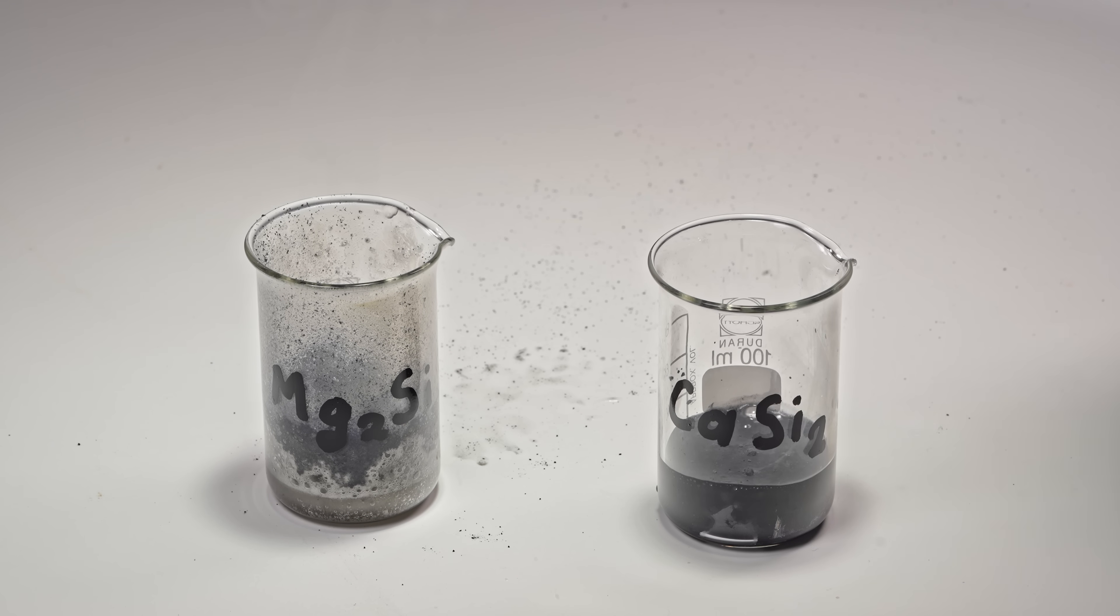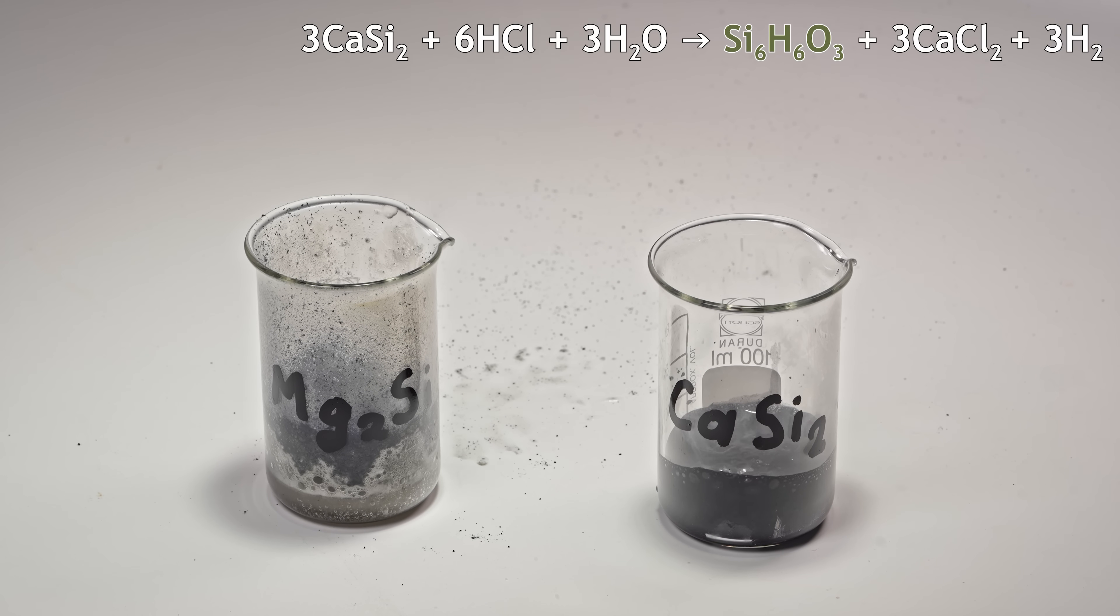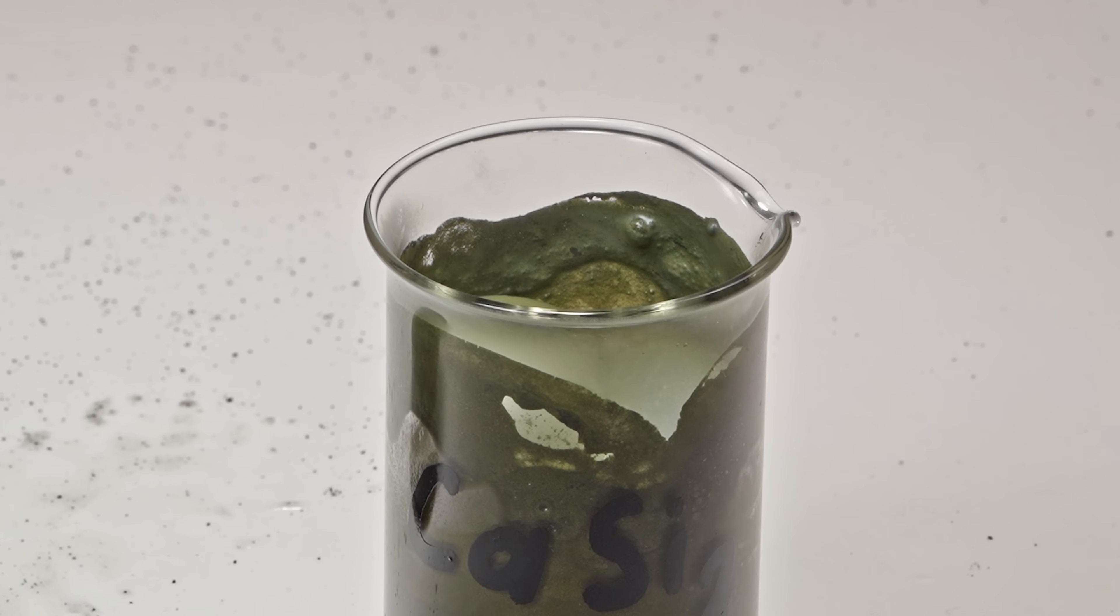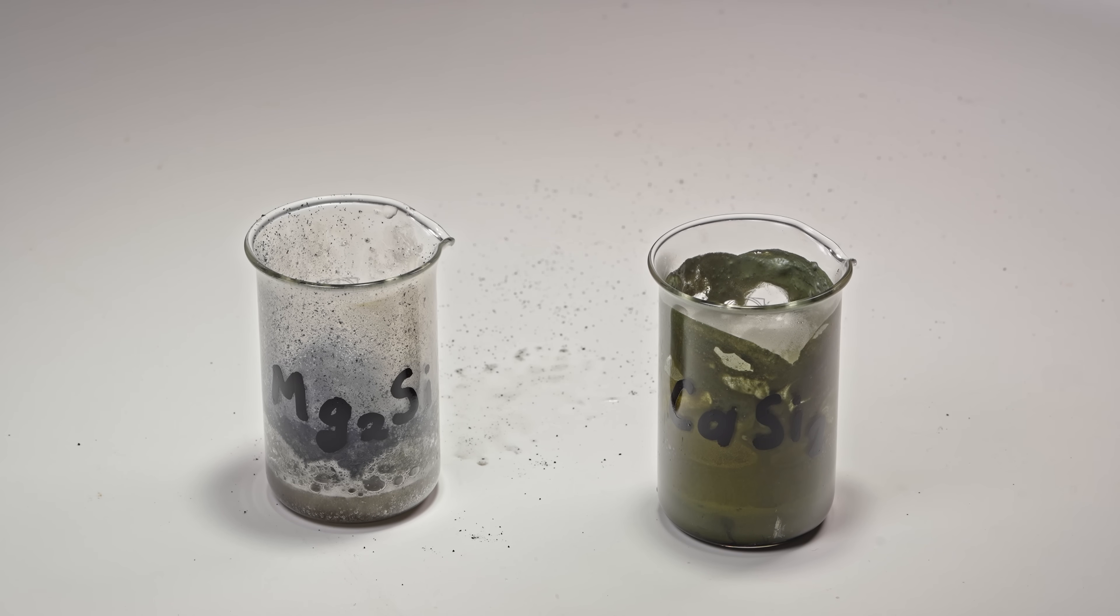Instead of silane, it just releases some hydrogen, which is not very active. Still, the green stuff we get from this reaction is really cool, and you probably didn't know about it. It's called siloxin. Let's synthesize it.